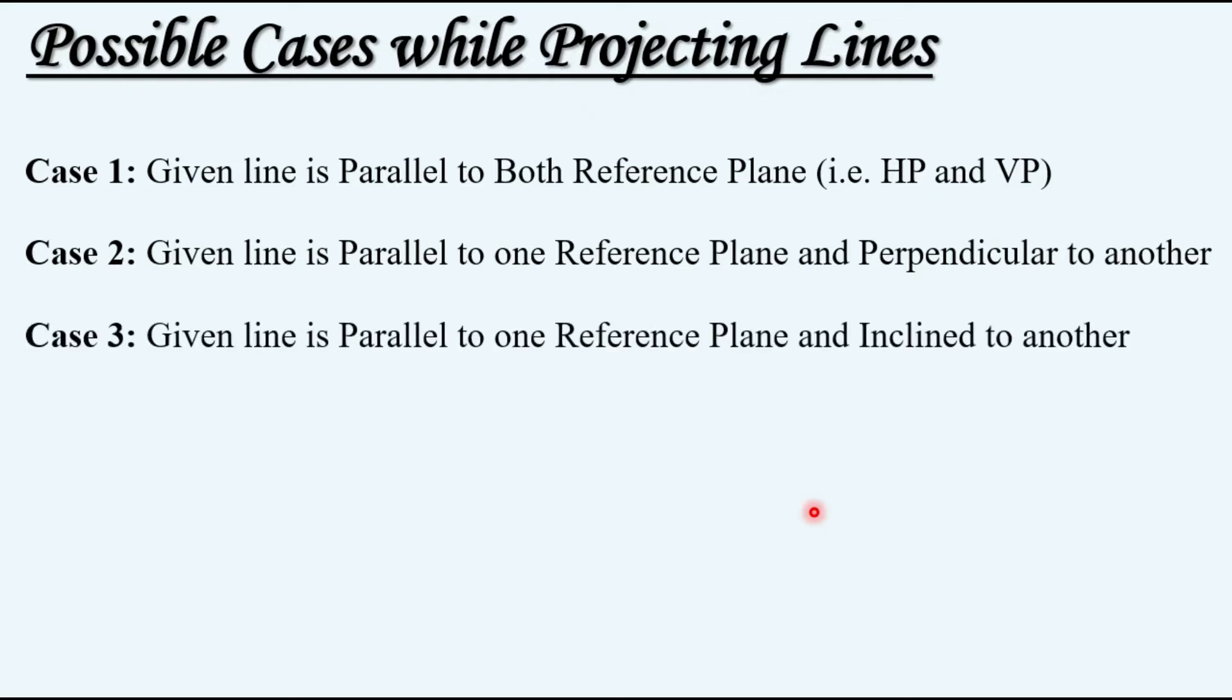Case number three: given line is parallel to one reference plane and inclined to another. Case number four: given line is inclined to both reference planes. Out of these four cases, case number one has already been discussed in the previous video and the link has been provided in the description.